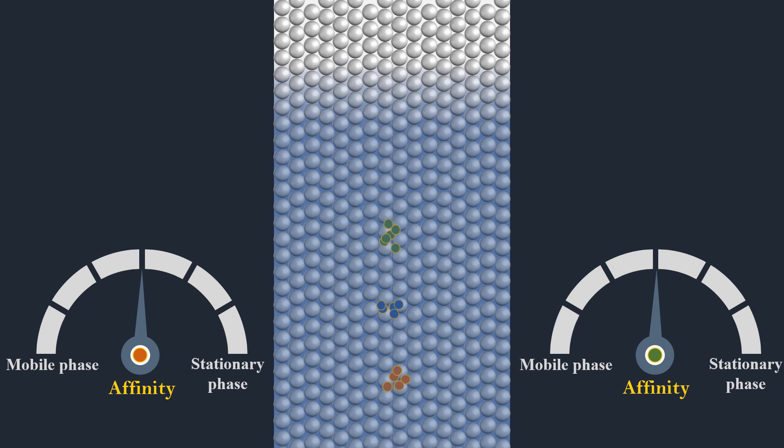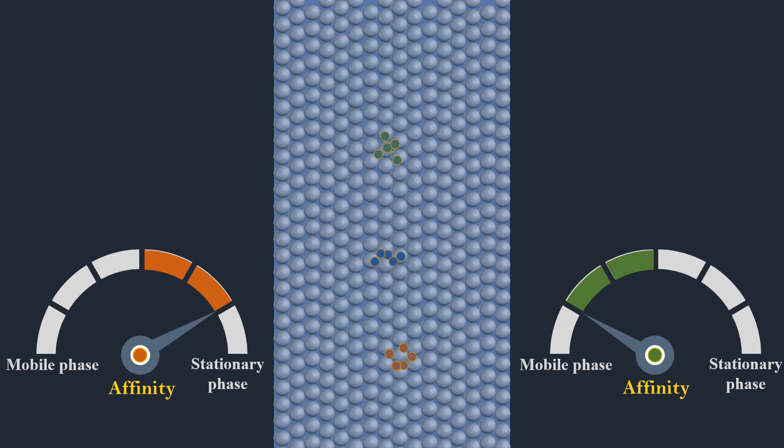And the component which has more affinity to the stationary phase, consequently, more interaction travels slower on the plate.